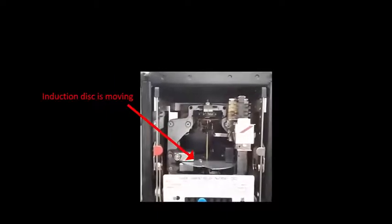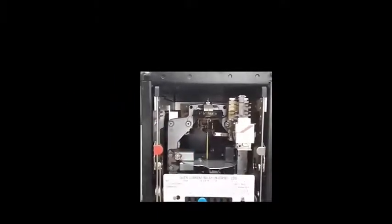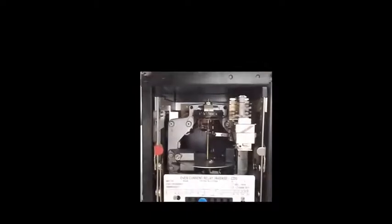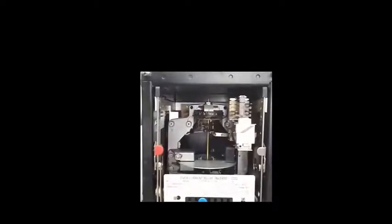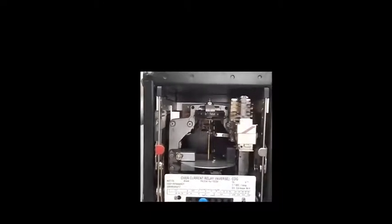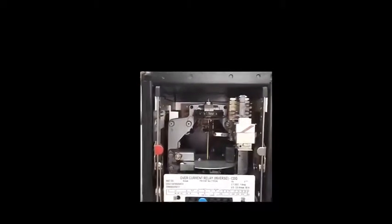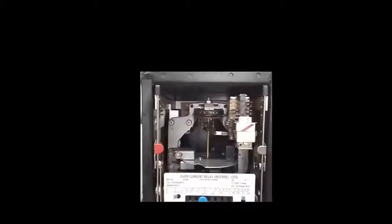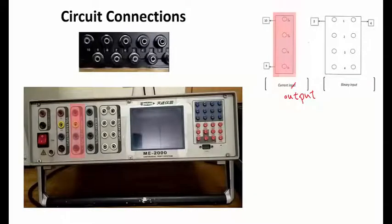Shown here is how the relay operates and trips. As soon as current passes through the relay, the induction disk rotates and allows the relay to trip. There is a slight malfunctioning of the flag, which can be seen — the flag is not working.